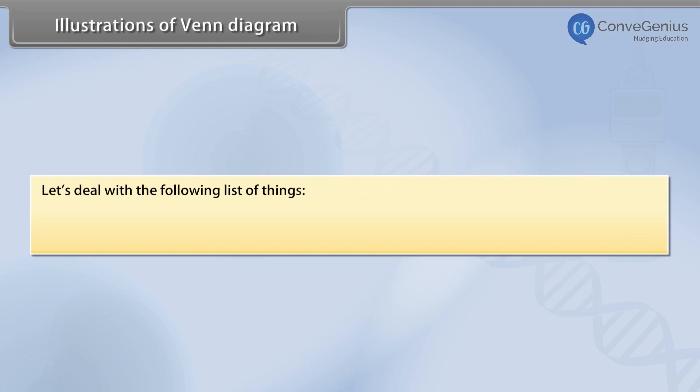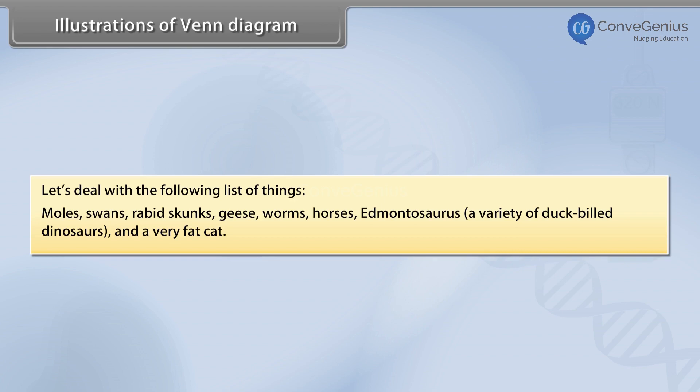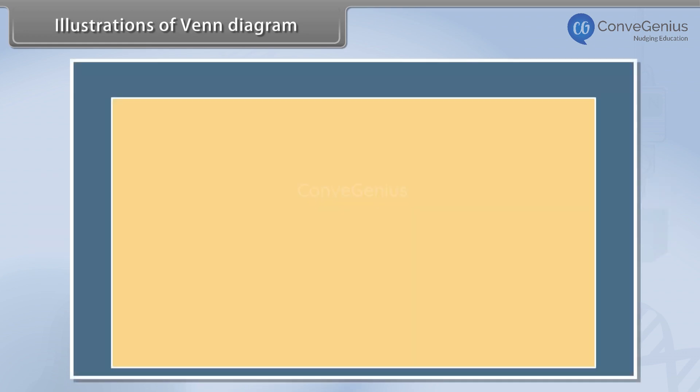Let's deal with the following list of things: Moles, Swans, Rabbit Skunks, Geese, Worms, Horses, Edmontosaurus, a variety of duck-billed dinosaurs, and a very fat cat. We'll call our universe animals.